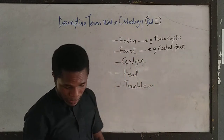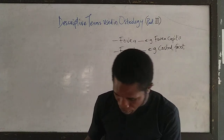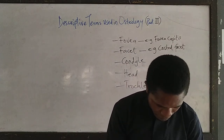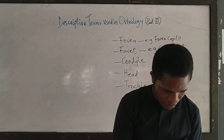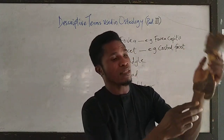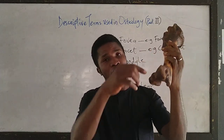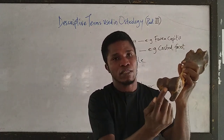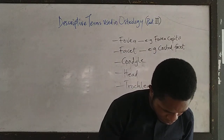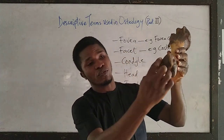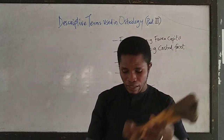The final term is trochlea. Trochlea is a pulley-like articular projection. If you look at this structure on the distal extremity of the humerus, this structure appears like a pulley. That is why we say it is a pulley-like articular projection. So this is a trochlea — a pulley-like articular projection.